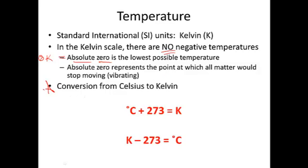Now, what you need to know is a conversion from Celsius to Kelvin. If you want to convert to Kelvin, you would take your Celsius temperature and add 273. If you need to find the temperature in Celsius, you would subtract 273 from the Kelvin temperature.